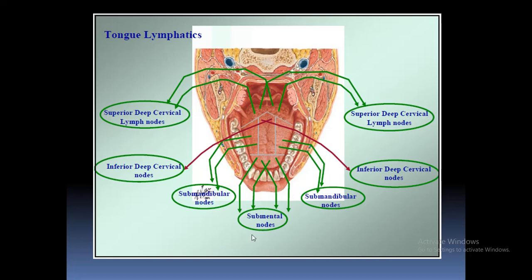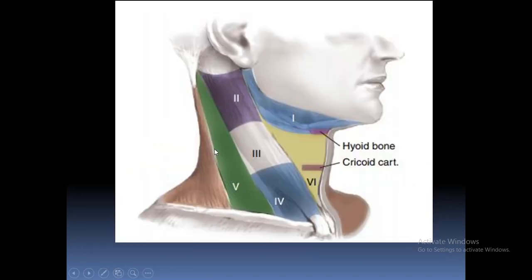This is the lymphatics of the tongue. The tip of the tongue drains into the submental and submandibular nodes. The most posterior part of the tongue drains into the superior deep cervical nodes, and the middle part of the tongue drains into the inferior deep cervical lymph nodes. You can see the different levels of cervical lymph nodes: level 2 extends from the lower border of the mandible to the hyoid bone, level 3 from the hyoid bone to the cricoid cartilage, and level 4 from the cricoid cartilage to the suprasternal notch. In our next lecture, we will discuss the different causes of cervical lymphadenopathy and the treatment and management of such cases. Thank you.